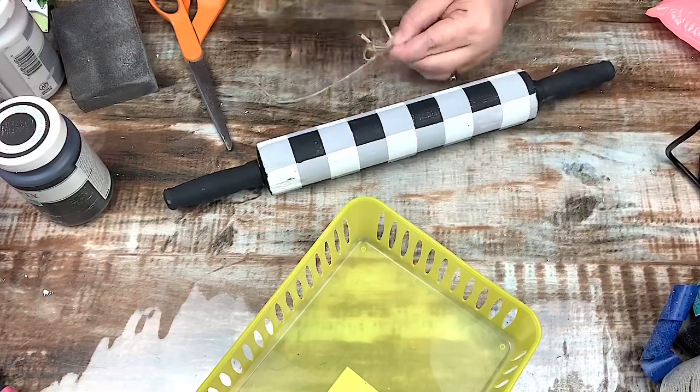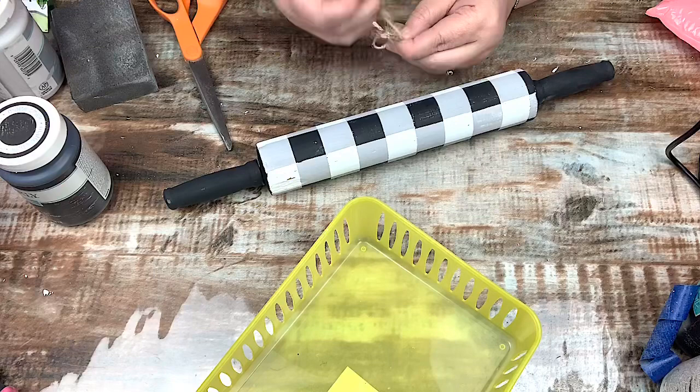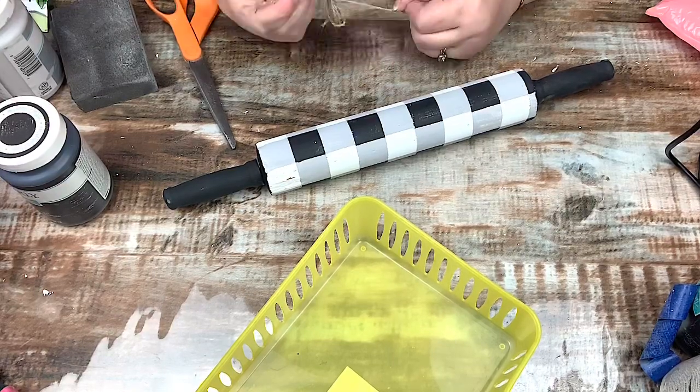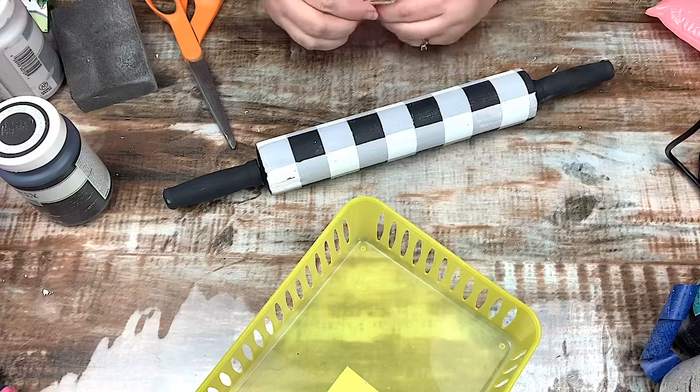I make a little twine bow, just wrap twine around my fingers several times, tie it off, and then I'm going to glue it to the rolling pin. And that is it. Pretty simple.